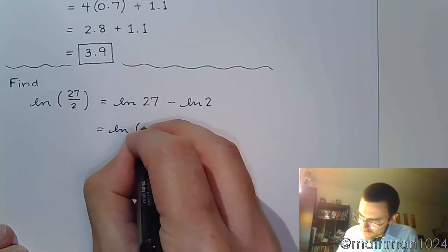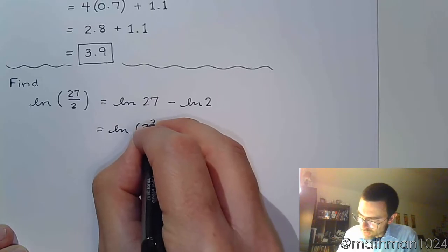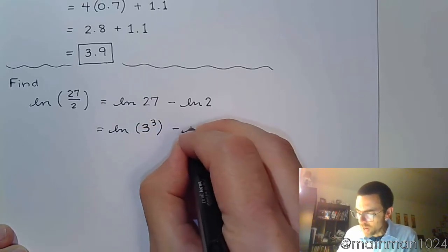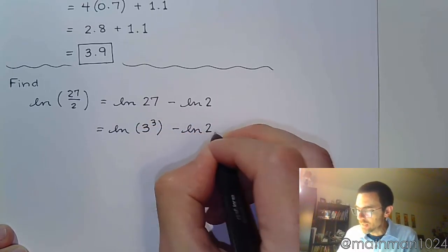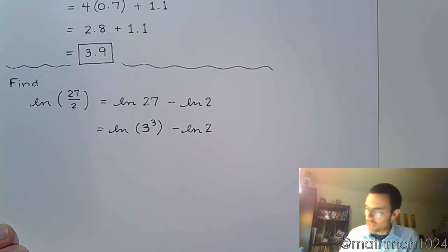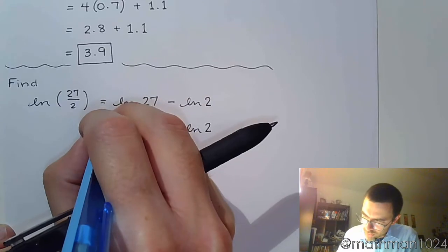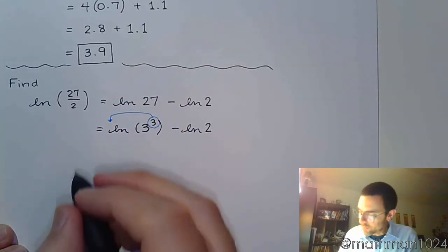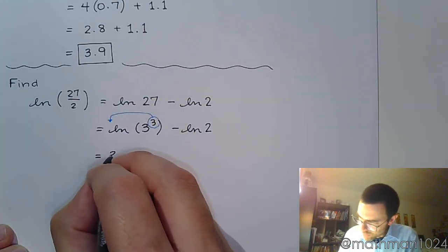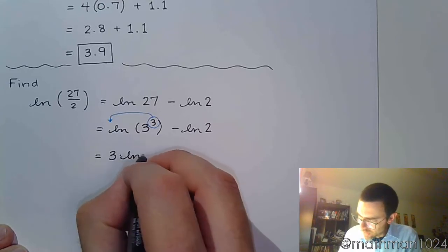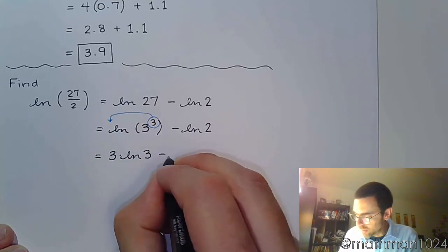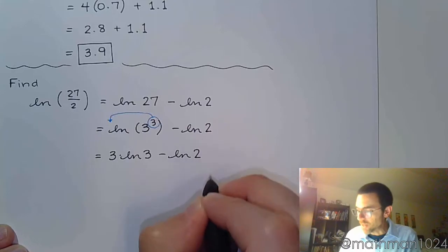27 can be rewritten as 3 to the third, right? We know our powers of 3, we can recognize that. And then, you've got the property of logarithms that says that power gets to come out front. So this becomes 3 times the natural log of 3 minus the natural log of 2.